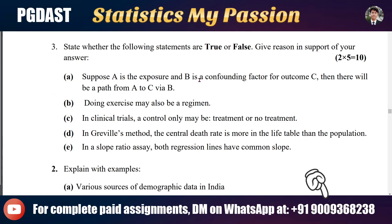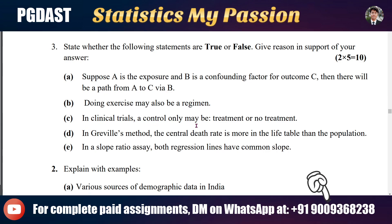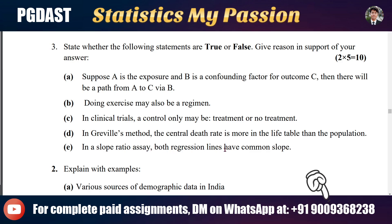Statement A: Exposure B is the compounding center and for outcome, there will be a path from A to C via B. Statement B: Doing exercise may also be a regimen. Statement C: In clinical trials or control, only treatment or no treatment may be used in the drivel method. Statement D: The central death rate is 10 per population. Statement E: In a slope ratio assay, both regression lines have a common slope. There are five true/false questions in total.